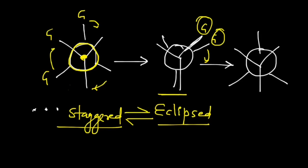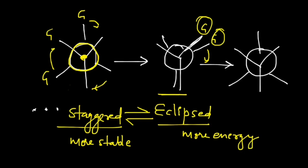If you have your own space you will be more than happy. Most of the time, the staggered configuration is more stable than the eclipsed conformation because there is crowding in the eclipsed form, and nobody likes to be in a crowd. So the energy of the eclipsed form is more than the staggered form because it is less stable.